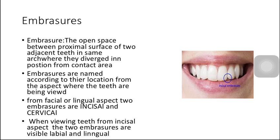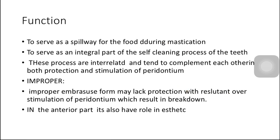Now we have embrasures. Embrasures are the open spaces between the proximal surfaces of two adjacent teeth in the same arch, where they diverge in position from the contact area. Embrasures are named according to the location from the aspect where the teeth are being viewed. From the facial or lingual aspect, two embrasures are visible — incisal and cervical. When viewing teeth from the incisal aspect, the two embrasures visible are labial and lingual. The functions of embrasures are: it acts as a spillway for food during mastication, and it acts as an integral part of the self-cleaning process. Both processes are interrelated and provide protection and stimulation of the periodontium.